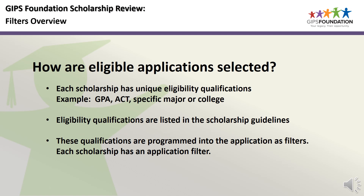How are eligible applications selected for review? Each scholarship has unique eligibility qualifications. For example, some scholarships have minimum grade point average or ACT scores. Some scholarships require a specific college major, or the student must attend a specific college. Eligibility qualifications are listed in the scholarship guidelines, which are listed on our Foundation website for student and reviewer use.